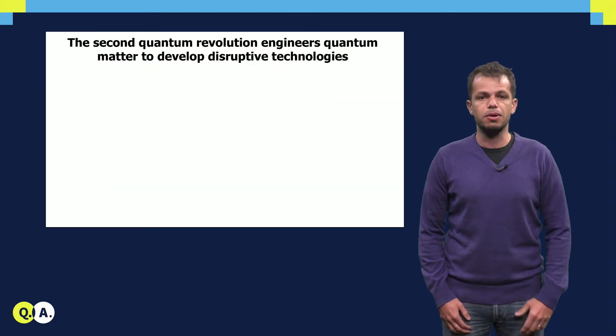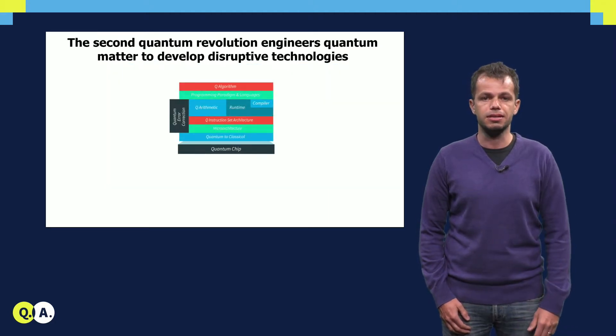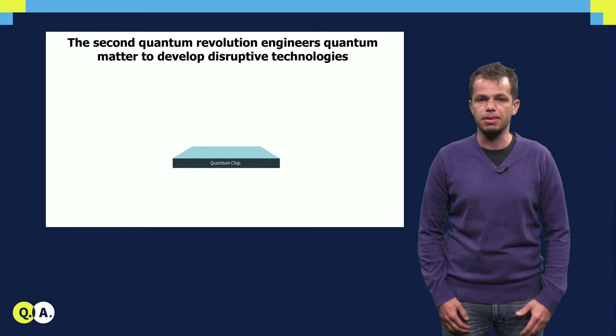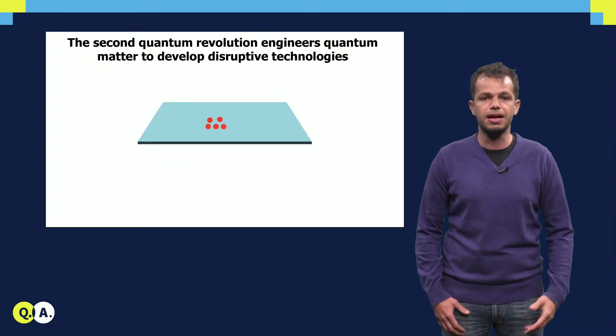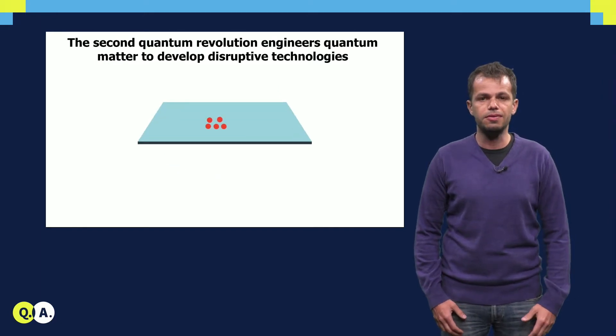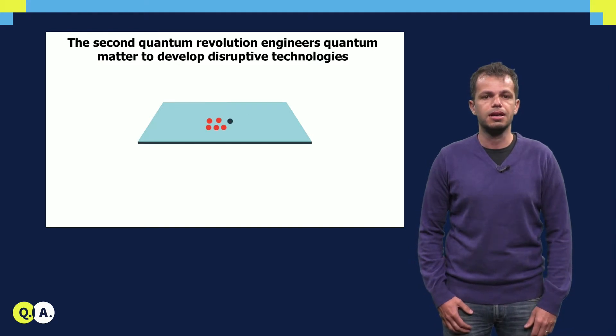Quantum materials provide the environment where qubits, the elemental unit of quantum information processing, are defined and live. Therefore, quantum materials are at the basis of a quantum computer.